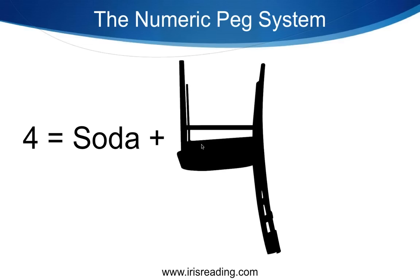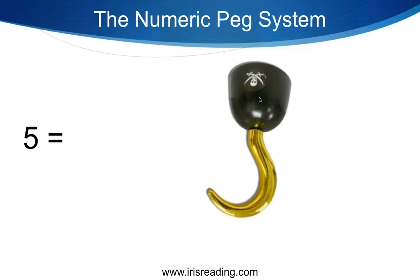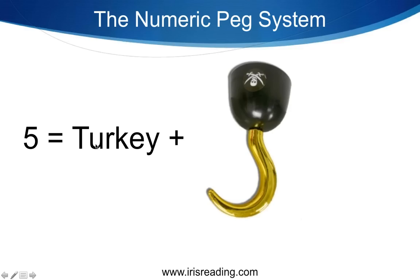Number four is a chair, and we need soda. Picture a chair with legs made out of soda bottles — those two-liter bottles. Imagine sitting on it. For number five — a hook — we need to remember turkey. Hooks remind me of pirates; turkey reminds me of Thanksgiving. So imagine a pirate uncle showing up on Thanksgiving and carving the turkey with his hook hand.